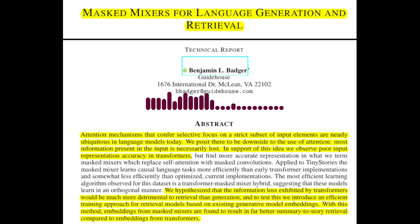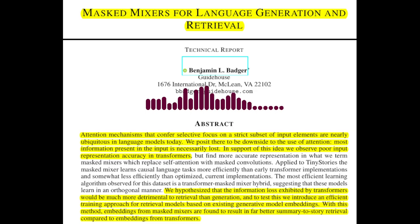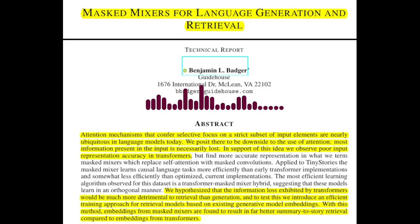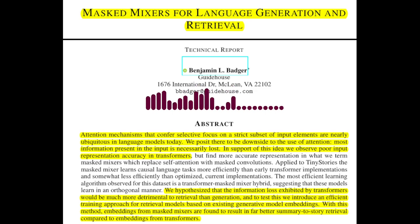The authors use a gradient descent-based approach to measure input representation accuracy. They attempt to reconstruct the original input from the model's hidden layers. In contrast, masked mixers consistently exhibit high input representation accuracy, even after training.